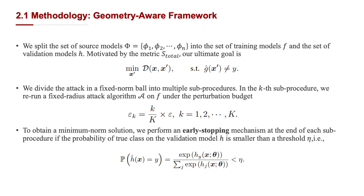Firstly, we split all source models into the training model set and the validation model set. To solve the problem, we first divide the attack in the fixed-norm ball into cascaded procedures. In each subprocedure, we rerun a fixed radius attack algorithm on training model F with an increasing perturbation budget. To obtain a minimal radius solution, we perform an early-stopping mechanism at the end of each subprocedure if the probability of the ground truth on the validation model G is smaller than threshold eta.